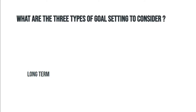Next, we have medium-term goals. These are goals that you wish to complete within one to three years. And lastly, you have your short-term goals. These are immediate goals that set you up to achieve your larger or more long-term goals. It is important to identify these goals when setting out to achieve them so that you have a proper time frame to accomplish them.